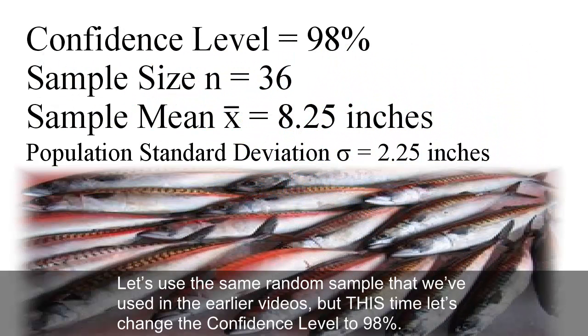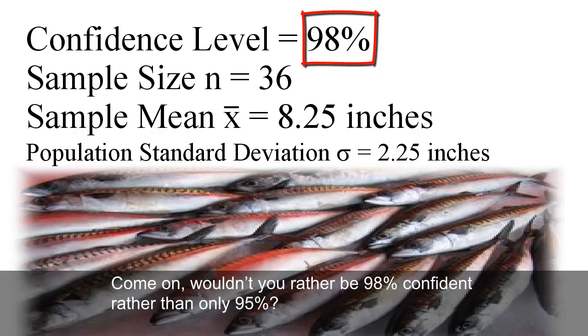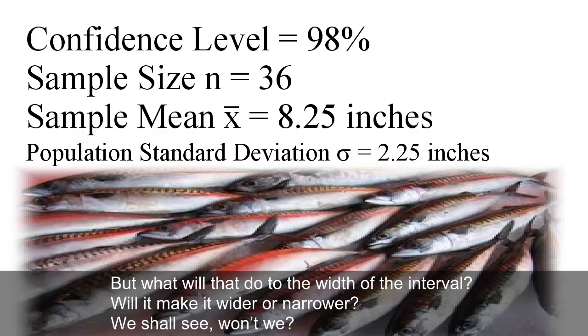Let's use the same random sample that we've used in the earlier videos, but this time, let's change the confidence level to 98%. Come on! Wouldn't you rather be 98% confident rather than only 95%? But what will that do to the width of the interval? Will it make it wider or narrower? We shall see, won't we?